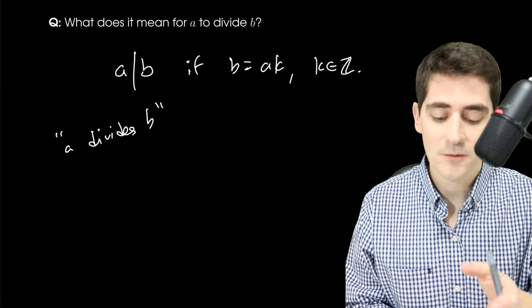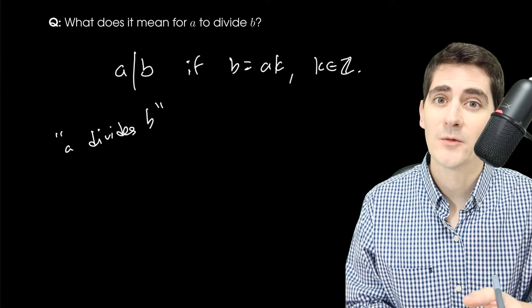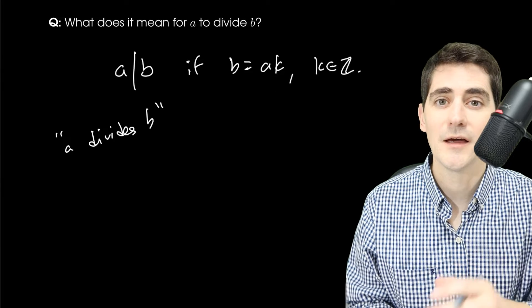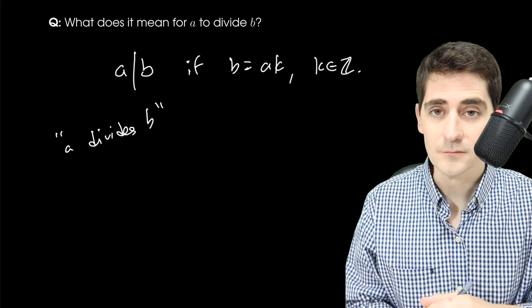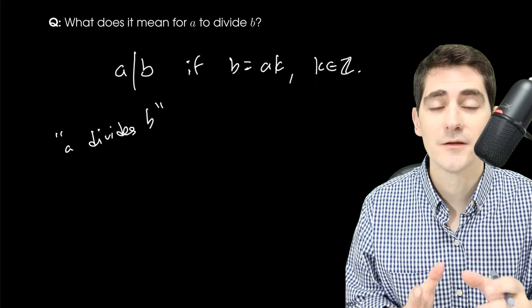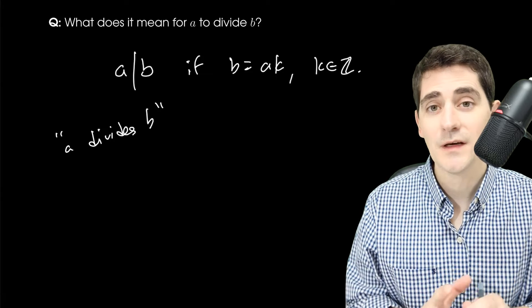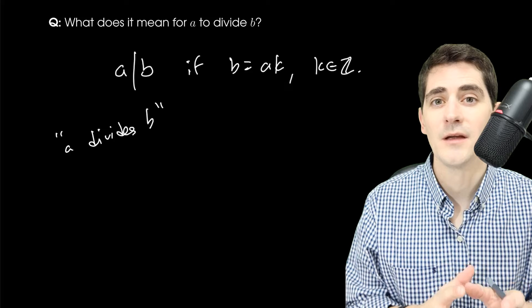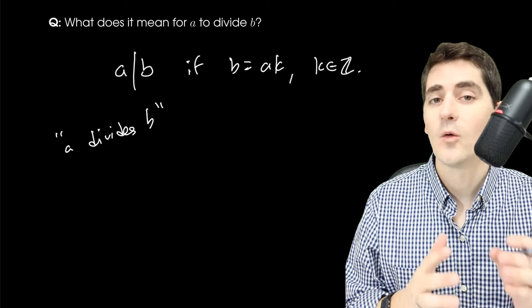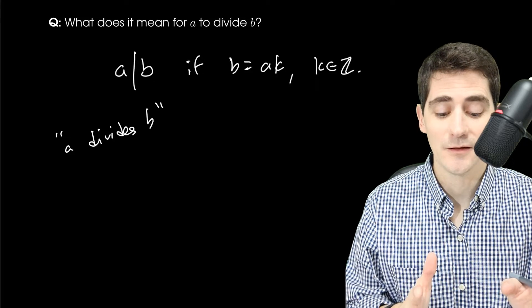Now just to clarify, when I write A divides B, this is not an operation. I'm not saying divide B by A. I'm not saying that B over A is a fraction or anything like that. What I'm saying is a true or false statement. A divides B or it does not divide B. And that's it. Those are our options.